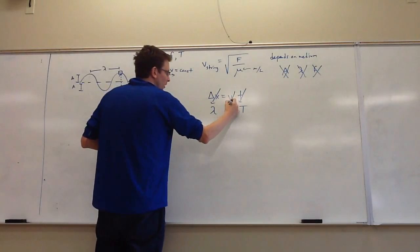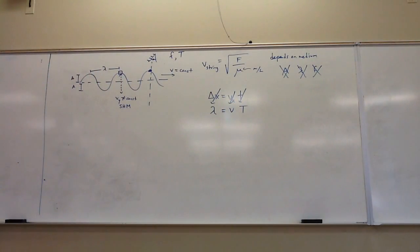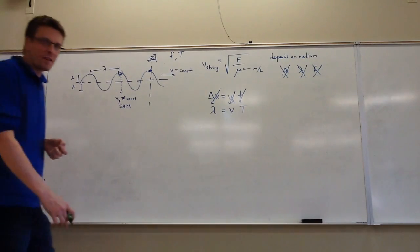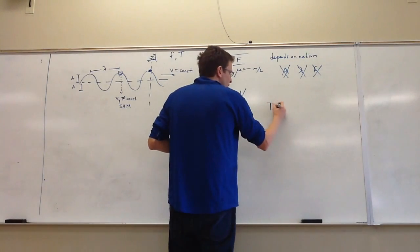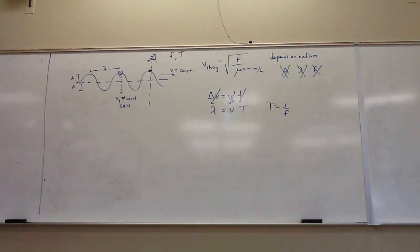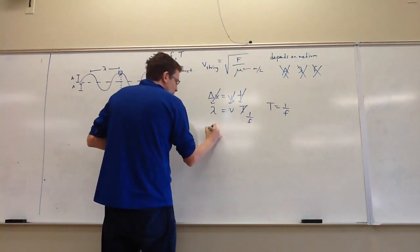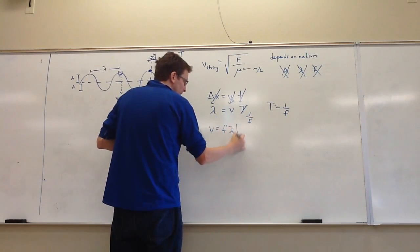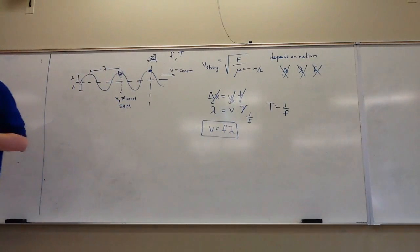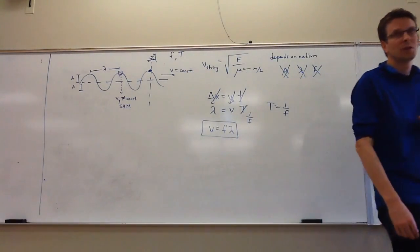We call the speed just v, the wave speed. The only other thing I want to do is substitute in frequency instead of period. Since they're reciprocals of one another, period is 1 over f. Bringing it to the other side, we get V = fλ. This is a very important equation that applies to waves of any kind.